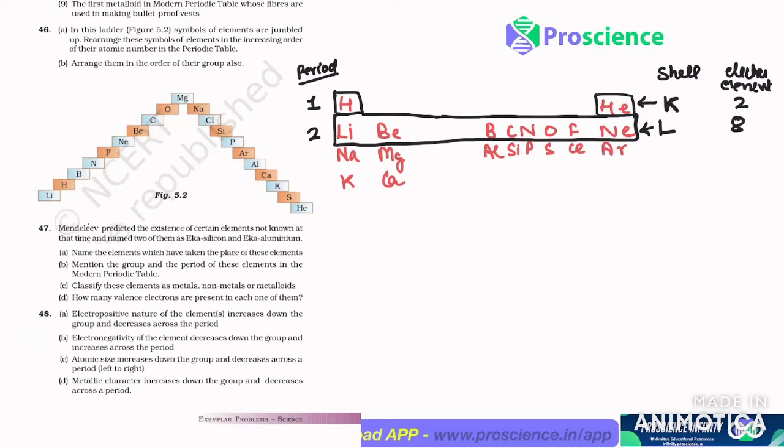Third shell में कितने? 8 होते है. तो M में भी आठ electron होते है तो आठ elements third period का भी part है. And fourth period में 18, N shell में 18 electrons होते है.